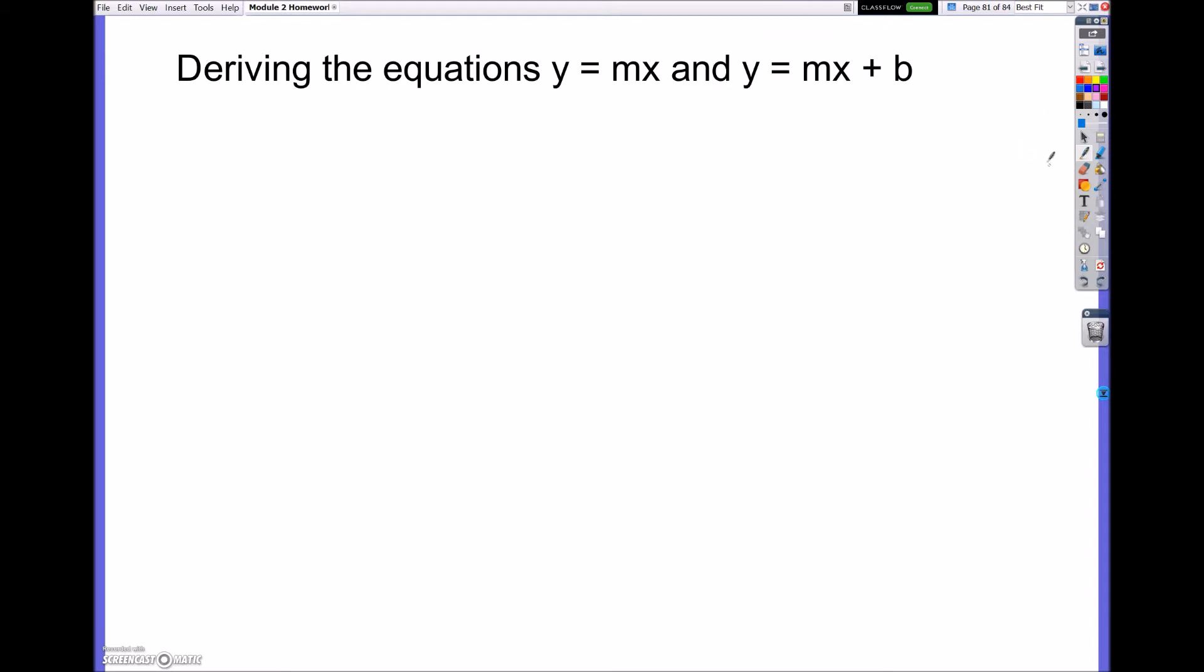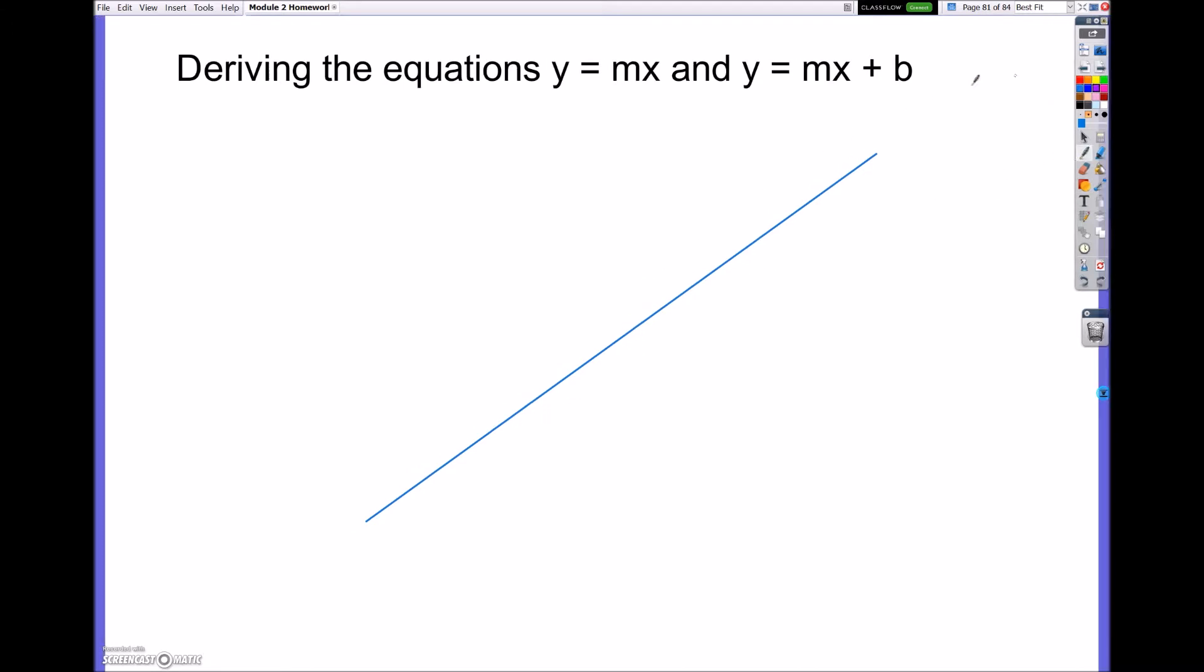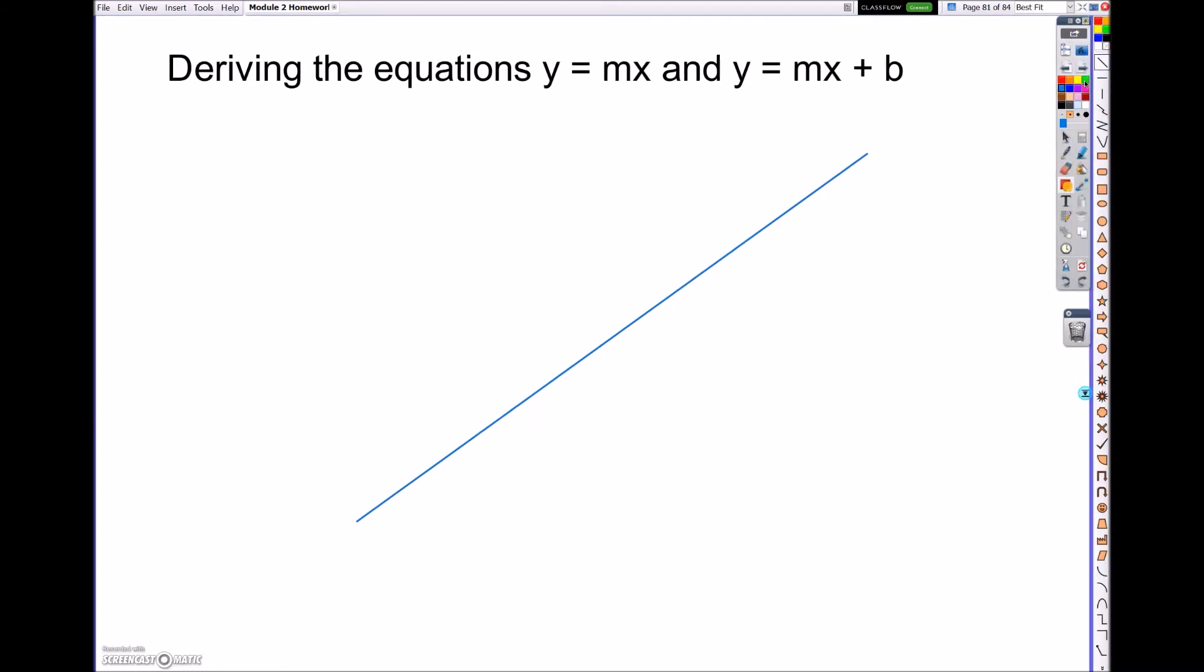So it's important to realize that this entire lesson is dealing with similar triangles on a line. So if we were to have an equation of a line, it looks something like this, what we're going to be wanting to do is comparing the triangles that can be made between the points. Between two points, we can always make a triangle on the equation of the line. And what we want to do is be able to use similar triangles.